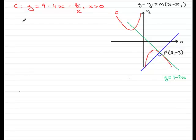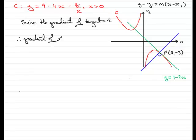So since the gradient of the tangent equals minus 2, therefore, the gradient of the normal is going to equal 1 half. Turn the value upside down and switch the sign.